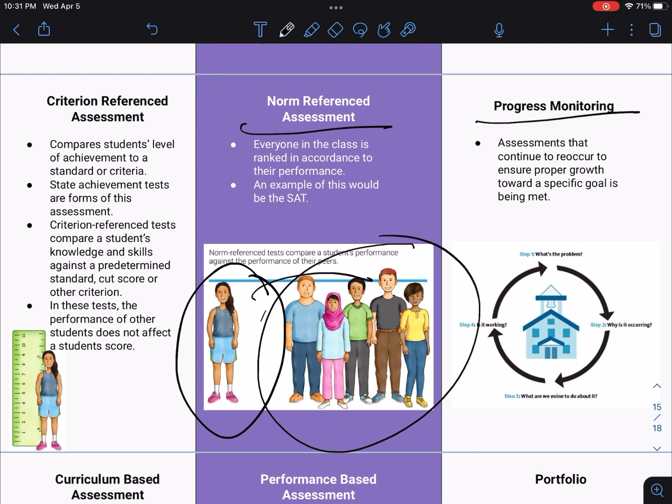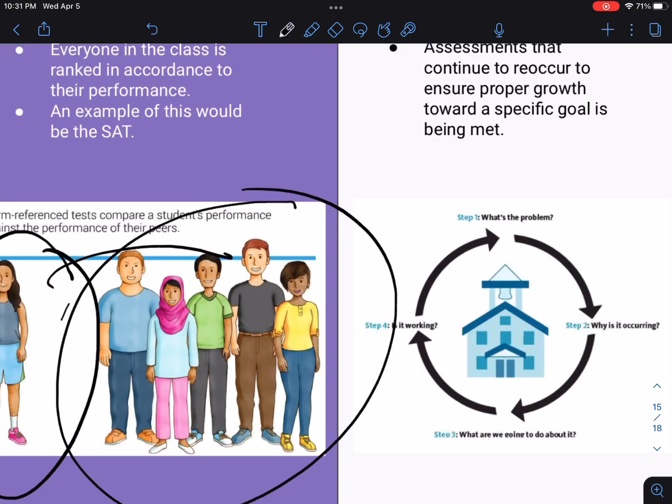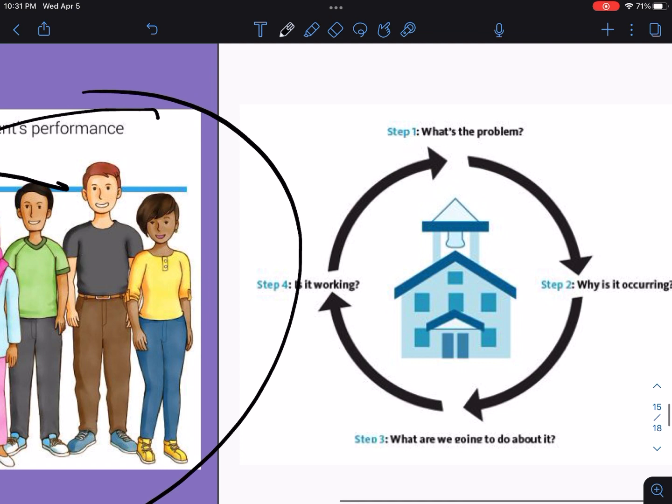For progress monitoring, these are assessments that continue to reoccur to ensure proper growth toward a specific goal is being met. Basically, this comes in steps. What's the problem? Why is it occurring? What are we going to do about it? And is it working?